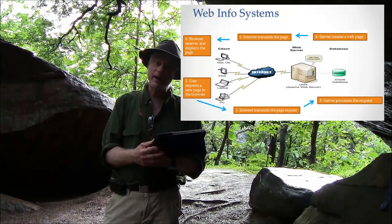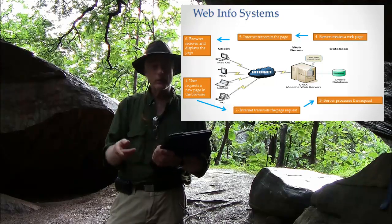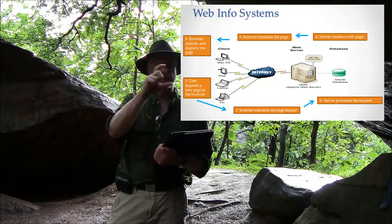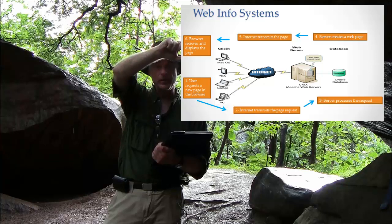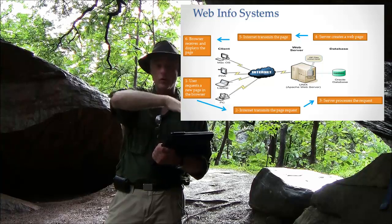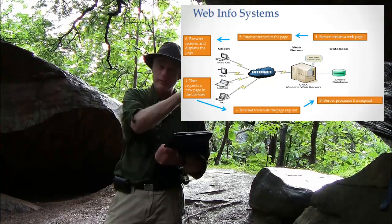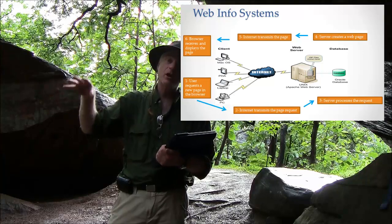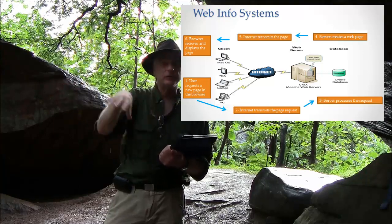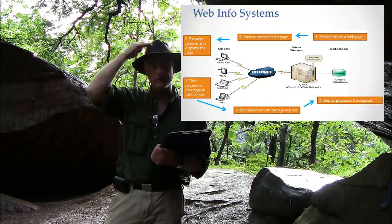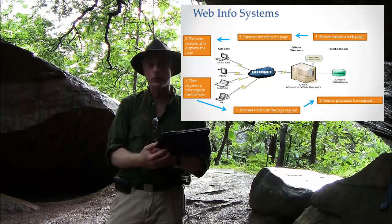The browser then displays that page and gives you more abilities. You can see how it's a circle: the browser makes a request, the server serves that request with another page, you do something else on that page which makes another request to the server, the server processes it, creates a new page, and sends it back — round and round until you go to a different server or turn off your browser.